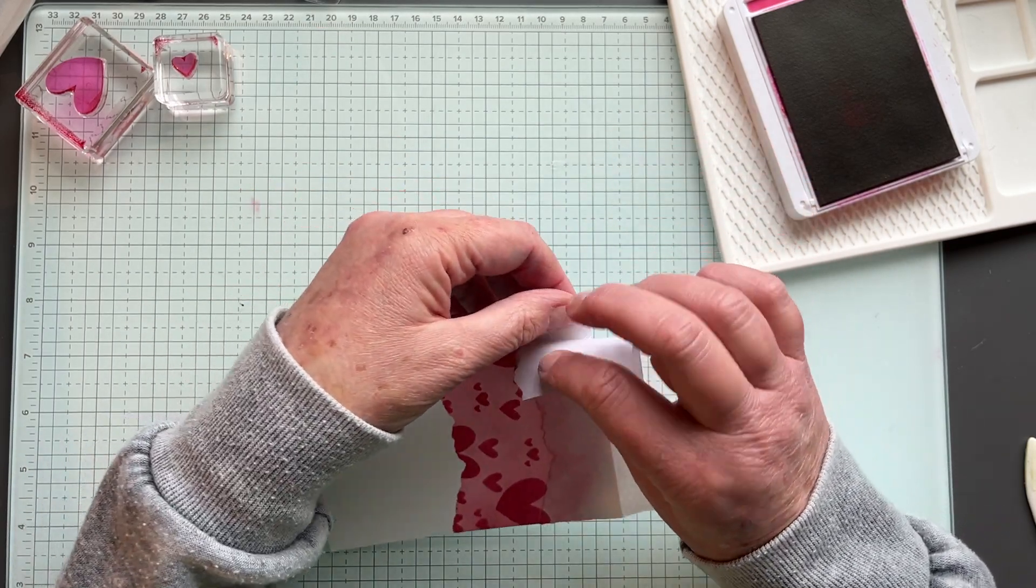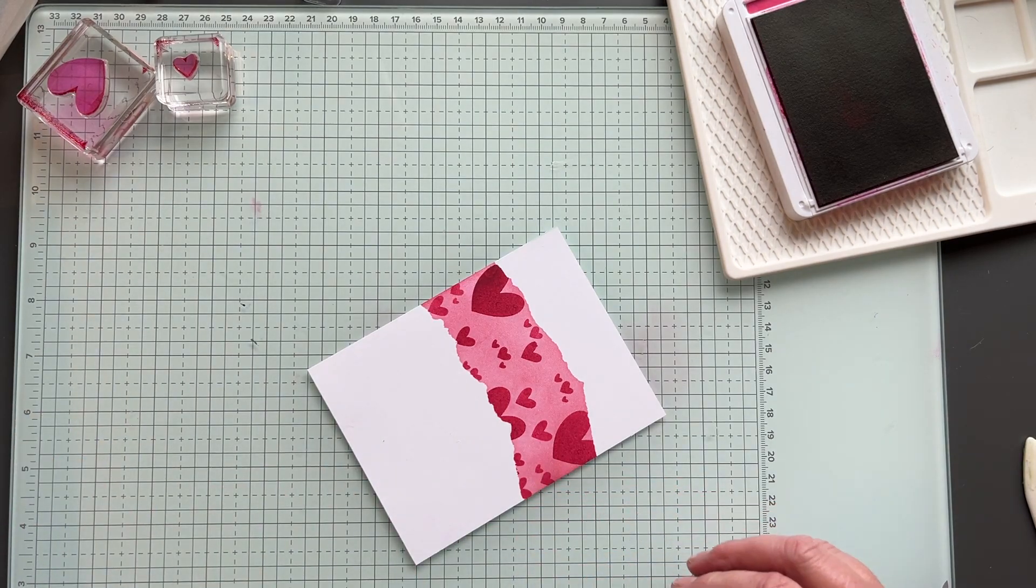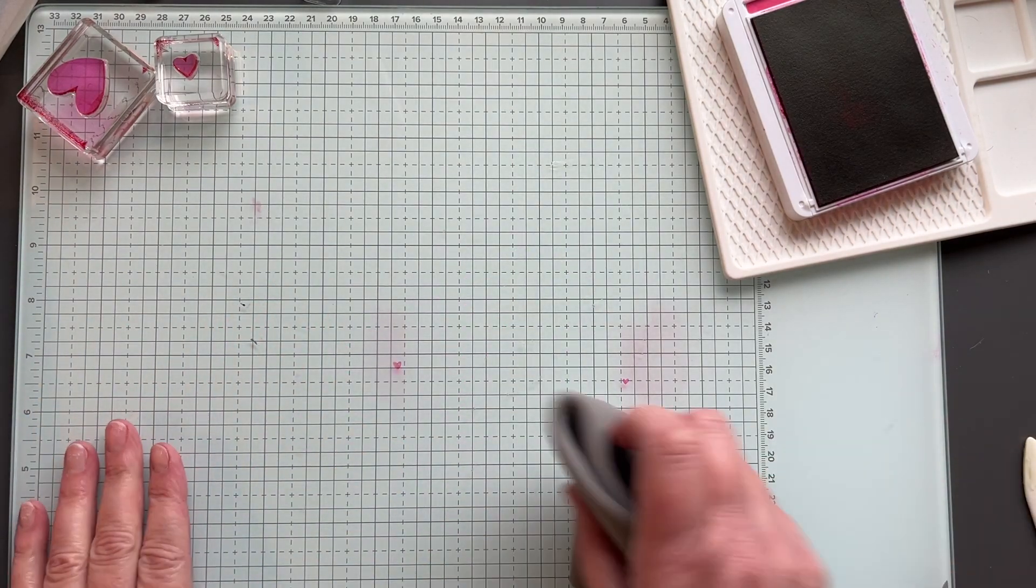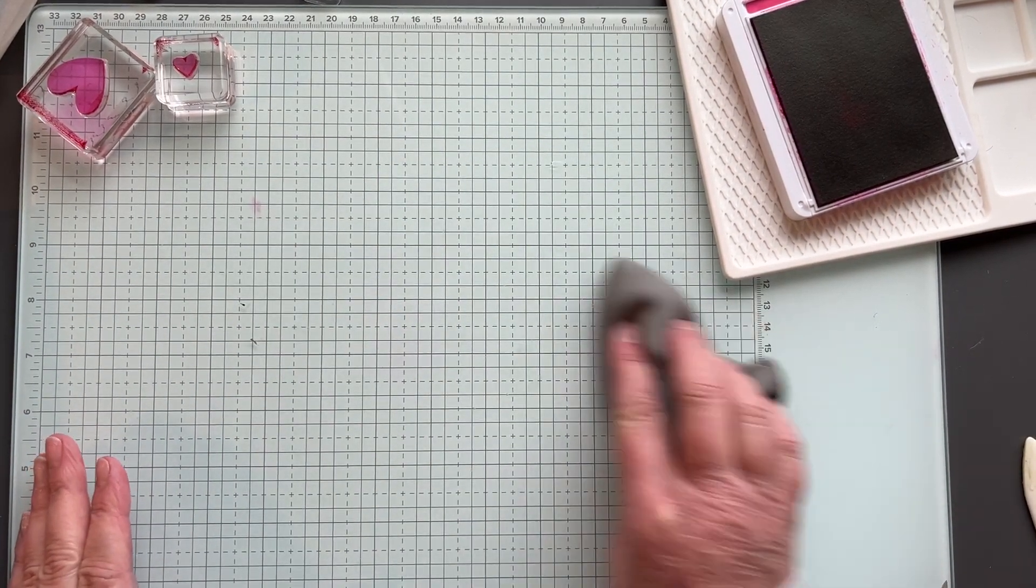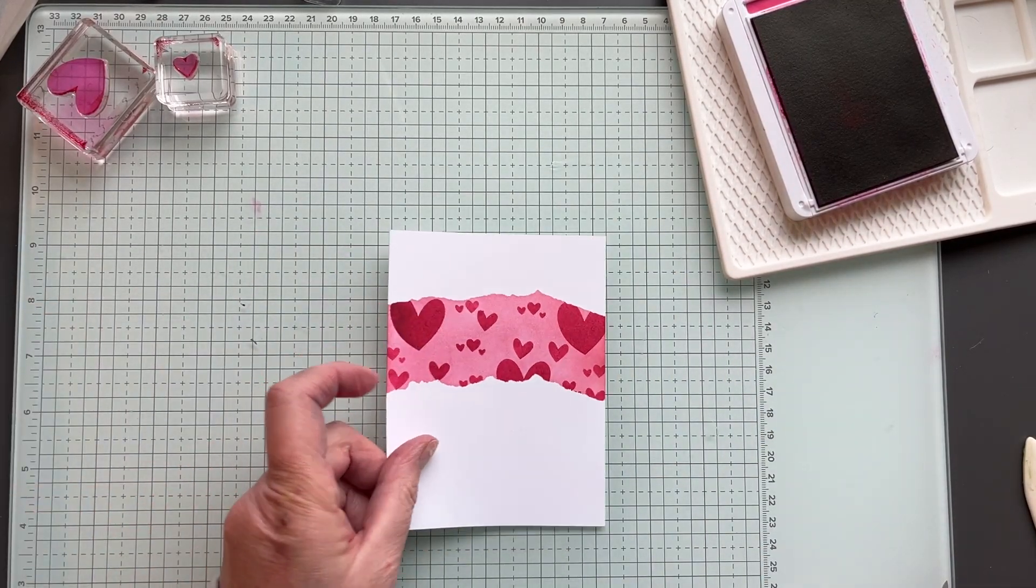And this piece just rubbed off. And then we're going to do this side. Just like that. And then take your chamois and wipe down your glass mat. Because of the blending, you don't want to get pink ink on your project further.